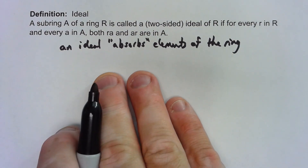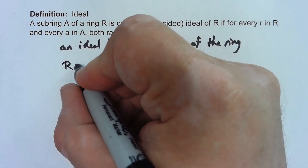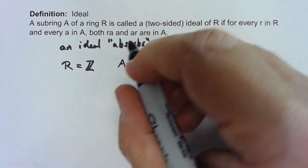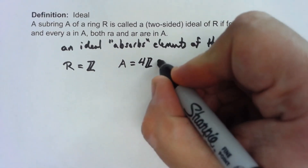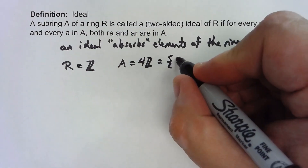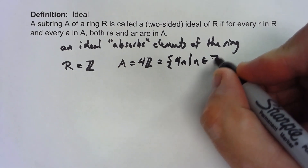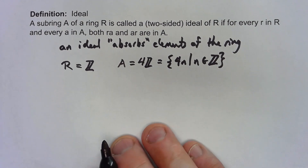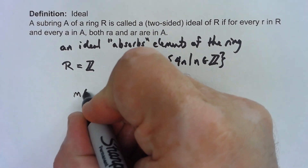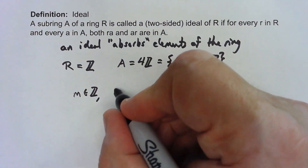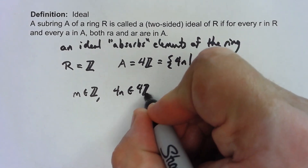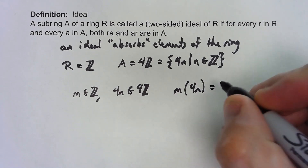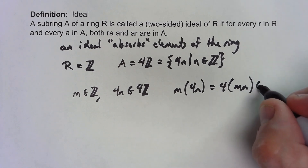To see how that works it's probably easiest to look at an example. Let's say my ring is the integers with standard addition and multiplication, and my ideal is 4Z, which is the set of all 4n such that n is in Z — basically the multiples of 4. So let's say that m is an element of Z and 4n is an element of 4Z. If we do m times 4n, we get 4 times mn, which is an element of 4Z.